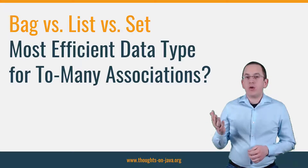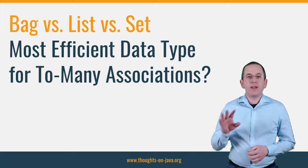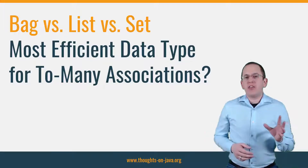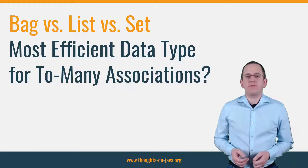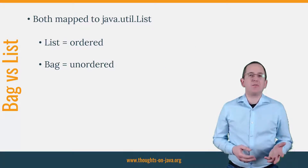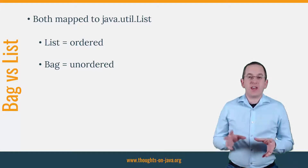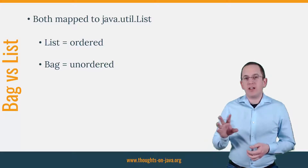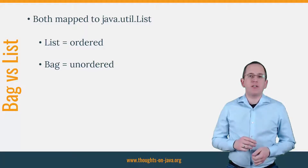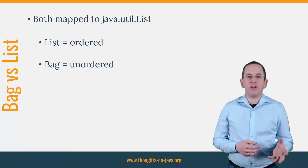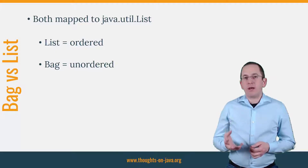List, set, and bag represent simple collections of entities. List and set should sound familiar because the java.util package contains interfaces with these names. But what is a bag? There is no class in the java.util package with that name. Hibernate's naming of the different collection types is a little bit confusing, because lists and bags are both mapped by a java.util list. The difference between them is that a list is ordered and a bag is unordered. So if you map your too-many association to a java.util list without specifying the order of your association elements, you are using a bag and not a list.